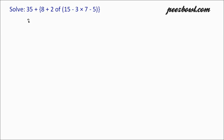In this example, we have 35 plus curly bracket 8 plus 2 of round bracket 15 minus 3 multiplied by 7 minus 5, closing round bracket, then closing curly bracket. As per the BODMAS rule, we need to work on brackets first.